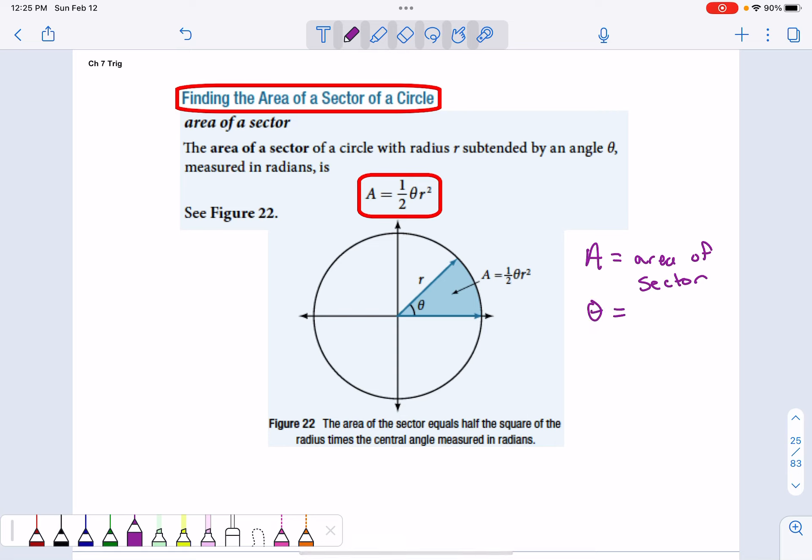Theta again has to be in radians, and r is the radius. This can be very useful when we're dealing with some type of shape that is a portion of a circle.